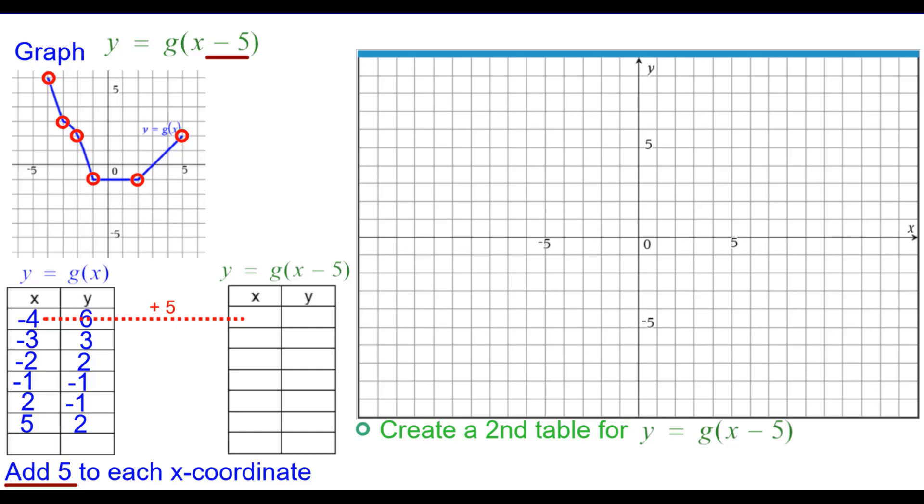So negative 4 plus 5 is positive 1. Keep the y coordinate the same, so it's 1 comma 6 that we'll plot. Negative 3 plus 5 is 2 comma 3. Negative 2 plus 5 is 3 comma 2, and so on.